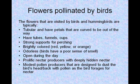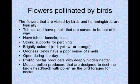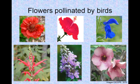Flowers pollinated by birds. The flowers that are visited by birds and hummingbirds are typically tubular, and have petals that are curved to be out of the way. Have tubes, funnels, cups. Strong supports for perching. Brightly colored, like red, yellow, or orange. Odorless, because birds have a poor sense of smell. Open during the day. Prolific nectar producers, with deeply hidden nectar. Modest pollen producers, that are designed to dust the bird's head and back with pollen as the bird forages for nectar. These are some examples of flowers that are pollinated by birds.